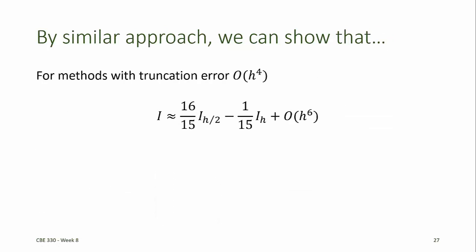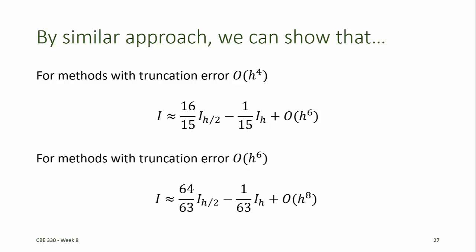Similarly, if we take estimates that have an error of order h to the fourth, such as could be obtained by Simpson's one-third rule, then we combine them by taking 16/15 of the integral estimate with the smaller step size minus 1/15 of the integral estimate with the larger step size, and we end up with an estimate that has an error of order h to the sixth. We can continue and develop an estimate with an error of order h to the eighth, and so forth.